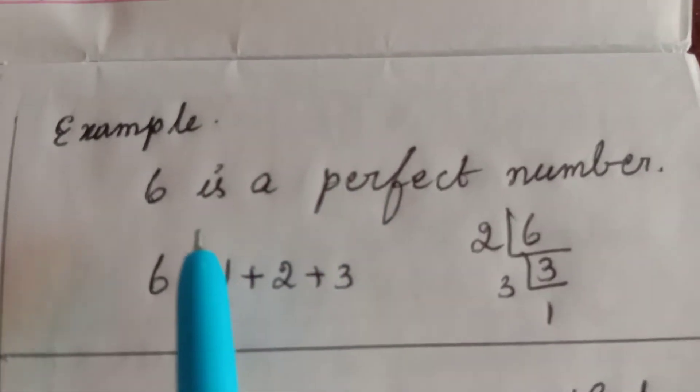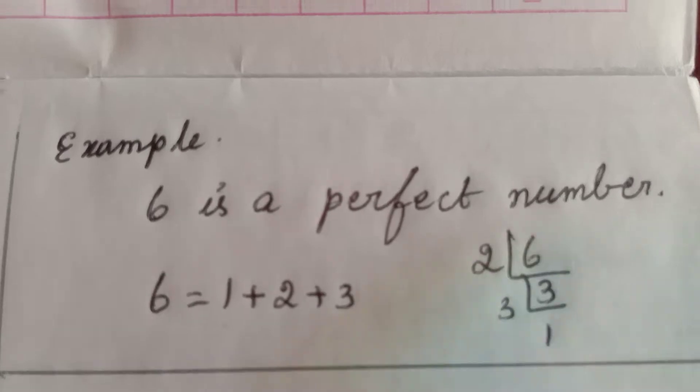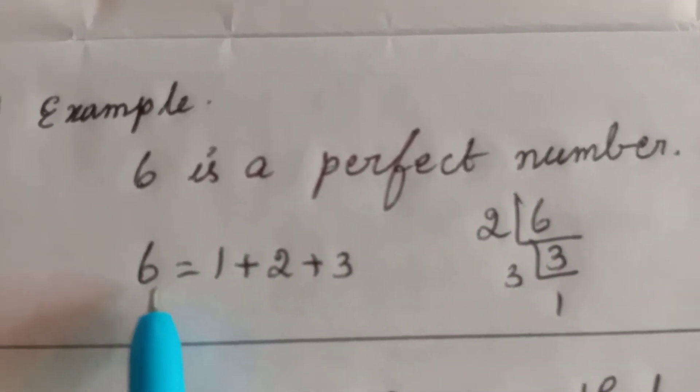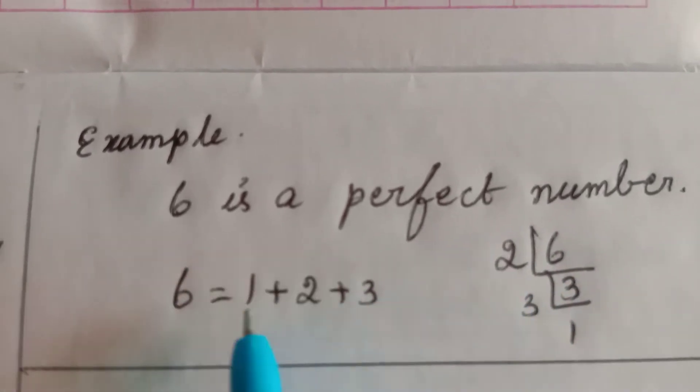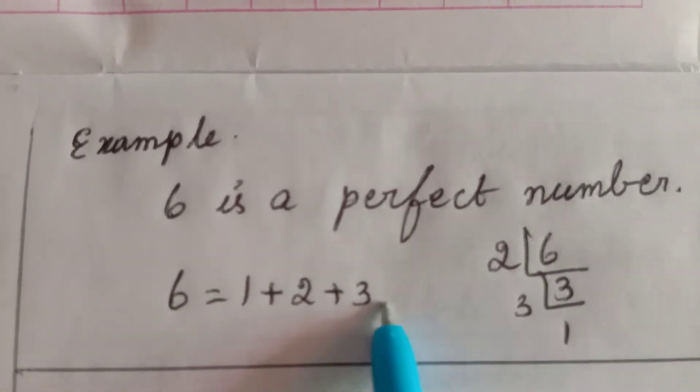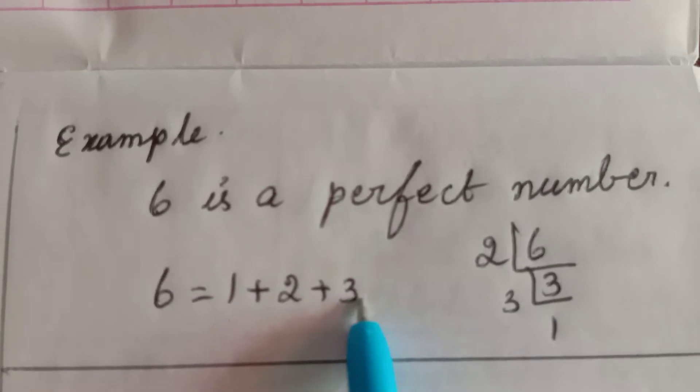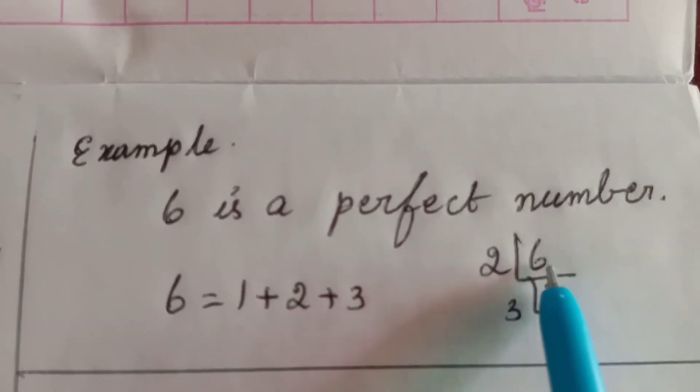Example: 6 is a perfect number. How? 6 is equal to 1 plus 2 plus 3. 1, 2, 3 are the factors of 6.